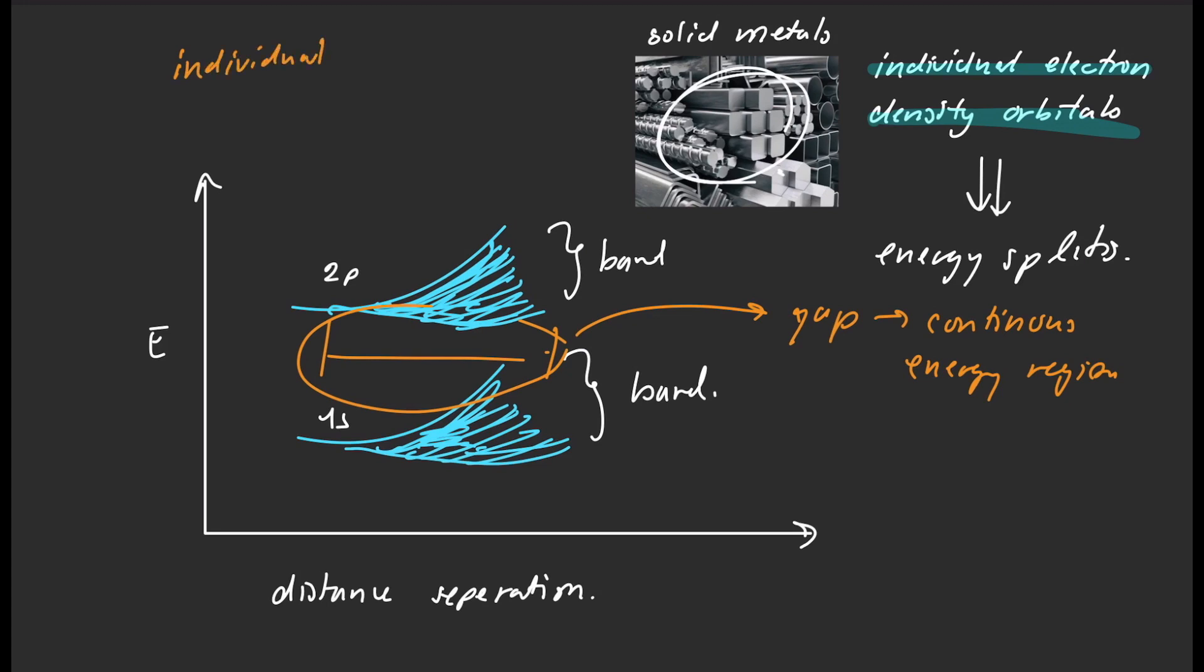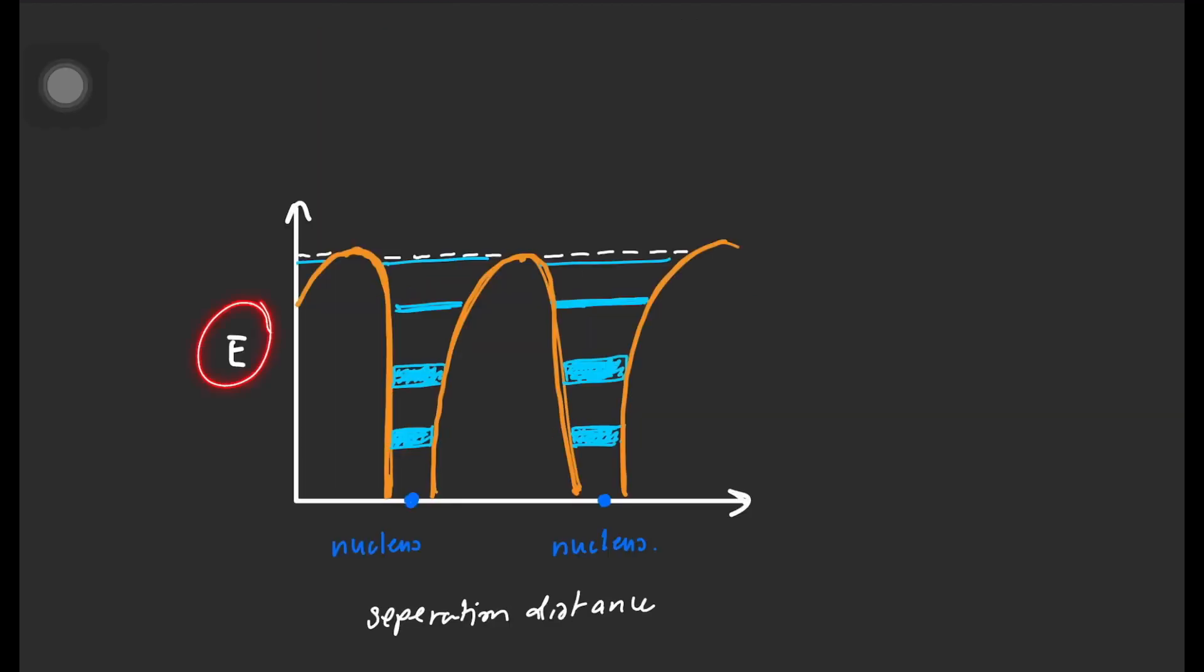The band theory of solids describes the way that our individual atoms and electrons within that solid metal actually interact, which means that this region between the bands is the gap energy where electrons cannot be found in this region of energy. For example, in this diagram, the y-axis is the energy and the x-axis is the separation distance between the nuclei of the atoms. Our electrons can be found all around the nucleus, and notice that the electrons that are closest to the nucleus are lower in energy, therefore are more stable.